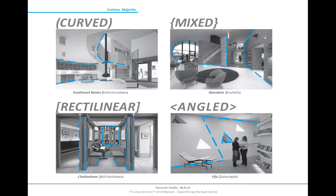A three-step process was used to categorize each center. My team and I looked at all available plans, sections, elevations, and photographs to distinguish contour majority. Based on unanimous consensus, four buildings were chosen with a simple contour emphasis overlay. Notice the swooping upper level in southwest Wales, the curved window openings in rectilinear interiors in Aberdeen, the abundance of right angles in Cheltenham, and the triangular windows in Fife.